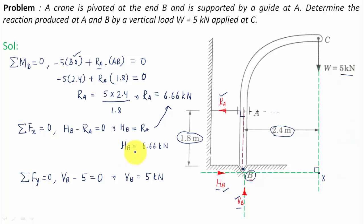So HB is equal to 6.66 and VB is equal to 5 kilonewton. Now we'll try to find the final resultant at point B, so resultant at point B is given by this formula: square root of HB square plus VB square. When you put in these values you're gonna get the reaction in the form of 8.33 kilonewtons.